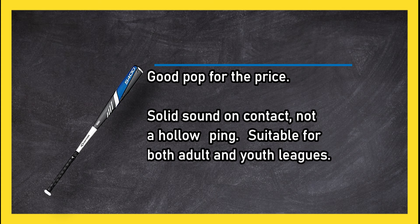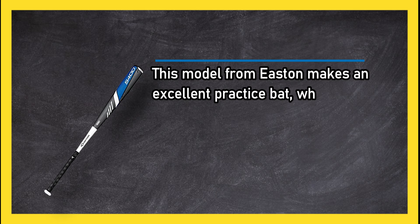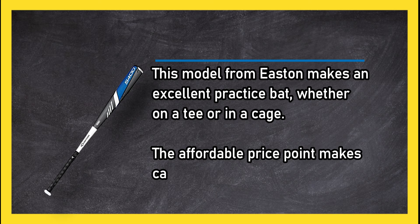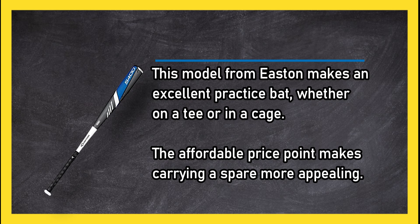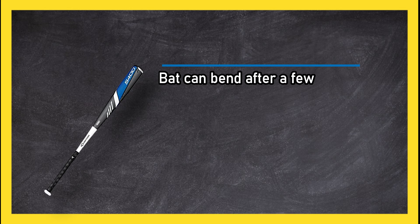Suitable for both adult and youth leagues, this model from Easton makes an excellent practice bat, whether on a tee or in a cage. The affordable price point makes carrying a spare more appealing. Bat can bend after a few uses.